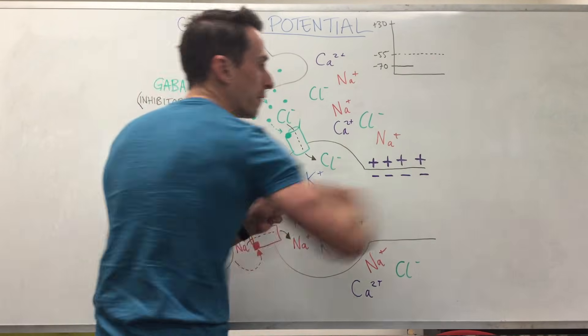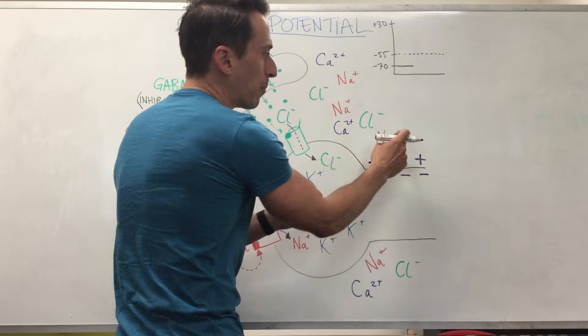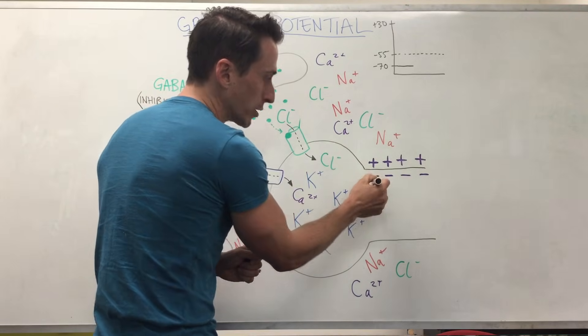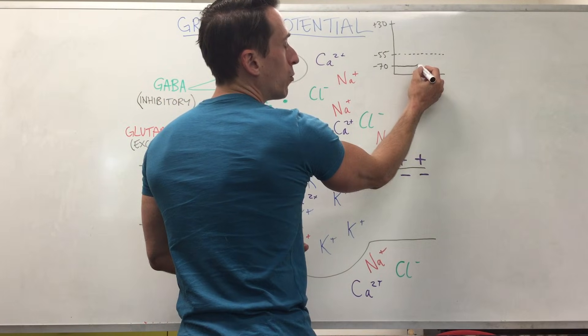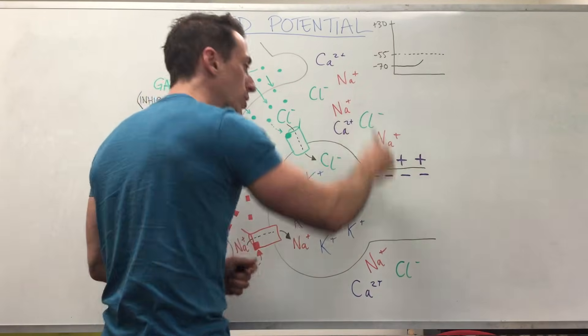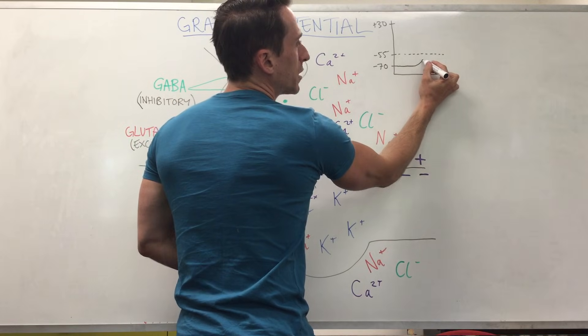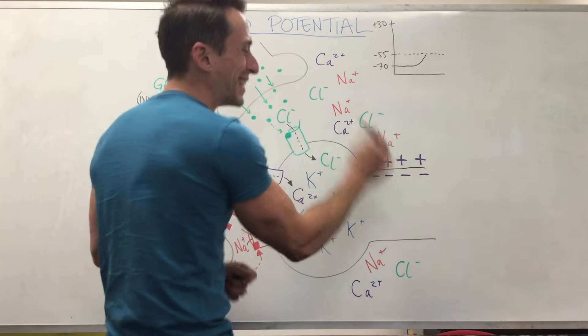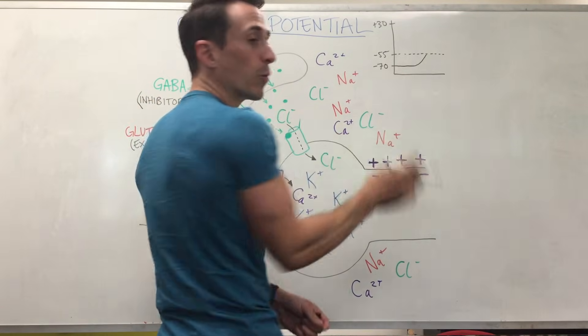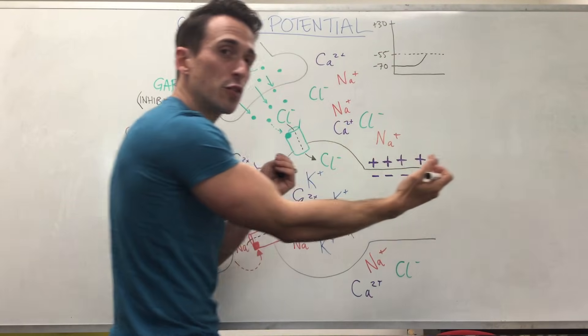Now when we want this neuron to fire off and send a signal, we need to open up channels that let positive things like sodium and calcium inside to change that negative to a positive, so it needs to move up to a more positive area. Once enough positive ions have moved in, enough positive sodium or enough positive calcium have moved in and it shifts this graph up. Once it goes from negative 70 to negative 55, this is what we call the threshold.